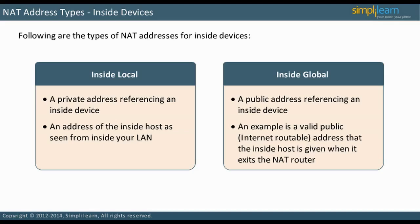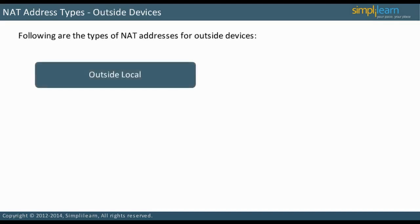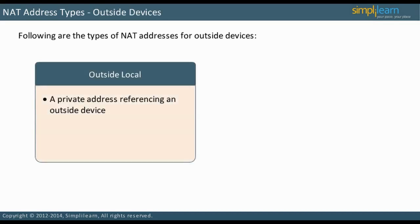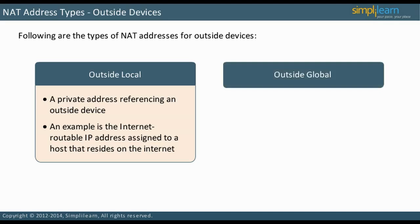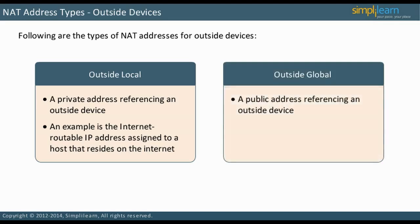Let us discuss NAT address types for outside devices. An outside local address is a private address referencing an outside device — it is the address of the outside host as seen from inside your LAN. An example is the internet-routable IP address assigned to a host that resides on the Internet. An outside global address is a public address referencing an outside device — it is the address of the outside host as seen from the Internet.